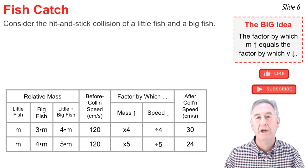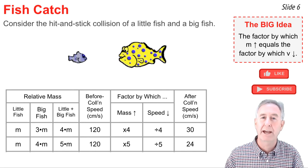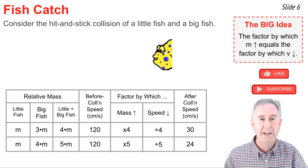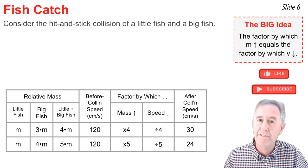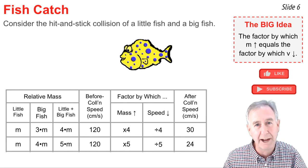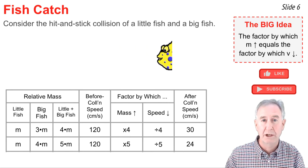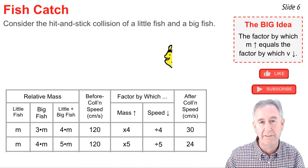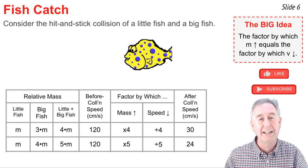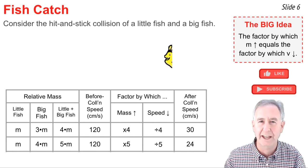In the second example, a fish of mass m is caught by a big fish of mass 4m. After the collision, the mass moving is m plus 4m, or 5m, so the mass has increased by a factor of 5. Therefore the speed decreases by a factor of 5: 120 divided by 5 gives 24 cm/s.